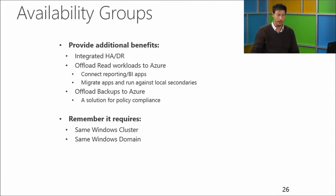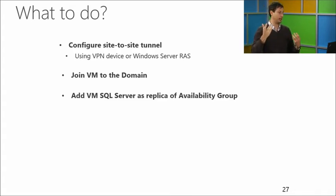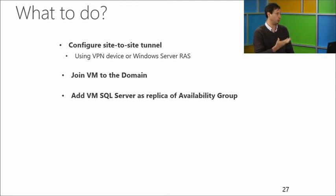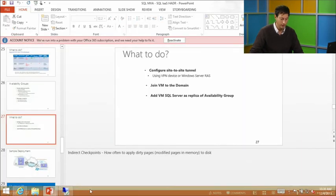For availability groups, the secondary in the cloud and your on-premise SQL Server need to be running in the same Windows cluster and Windows domain. To achieve this, you need to configure the site-to-site tunnel discussed earlier using a VPN device or Windows Server remote access services. Let me go and show some of the tunnels and how they look from the portal.